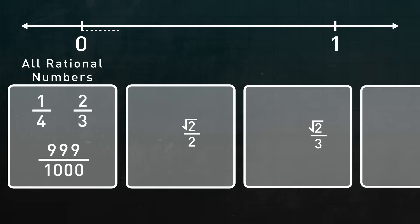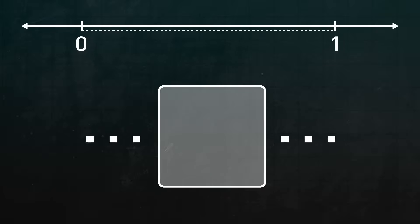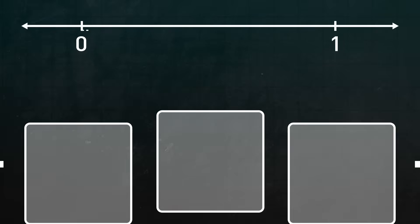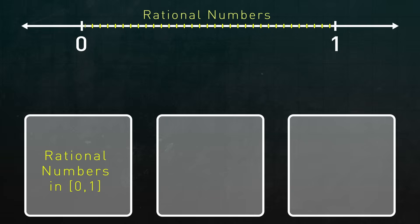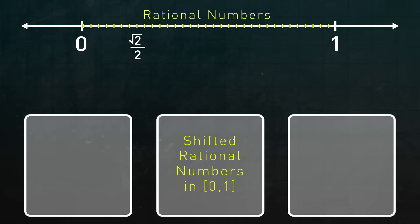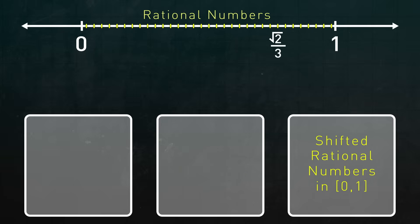So the square root of 2 divided by 3 is in a different bin than the square root of 2 divided by 2. In this way, all the numbers between 0 and 1 show up in exactly one bin. One way to visualize the bins is as shifted copies of the rational numbers. All the rationals are in the first bin. But if we shift them over a little bit until one of the points hits the square root of 2 over 2, then they become the contents of that bin. If we shift them again until one of the points hits the square root of 2 over 3, then they become the contents of that bin. I want to be clear that this is a metaphor, a helpful visualization.